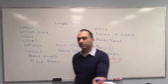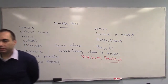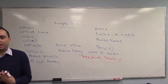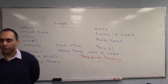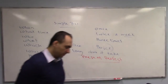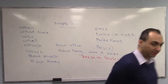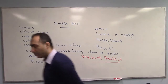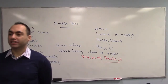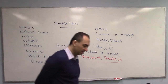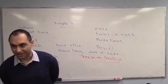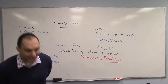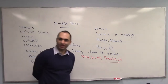Now Present Perfect Continuous — also easy. 'How long have we been studying English today?' About five hours. So: 'We've been studying English for five hours today.' That's Present Perfect Continuous — an action that started in the past and continues to now.